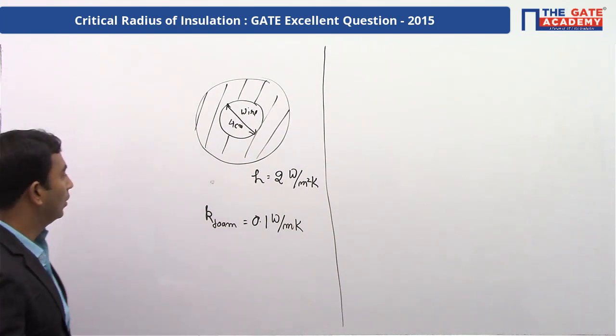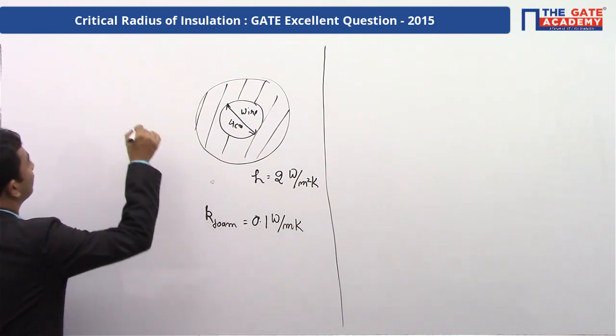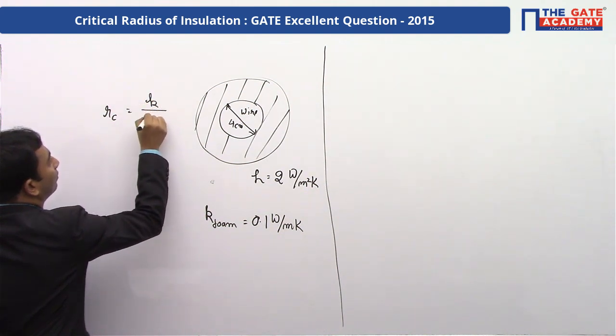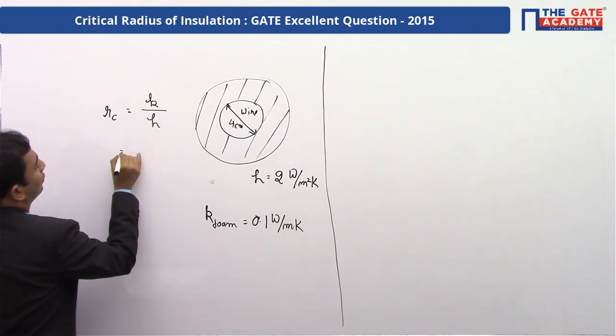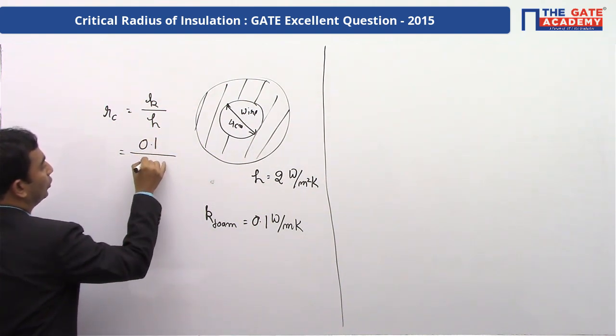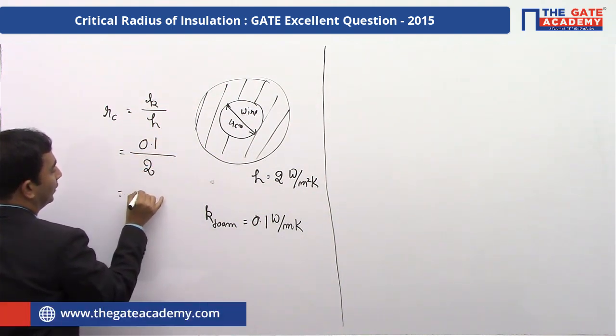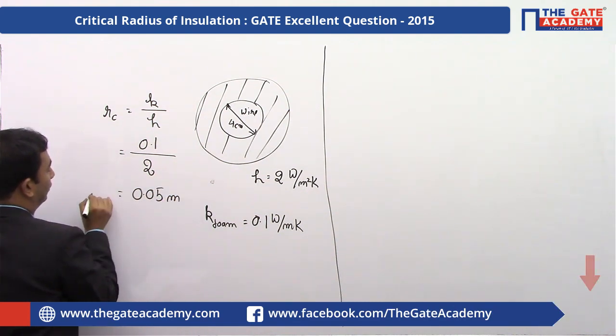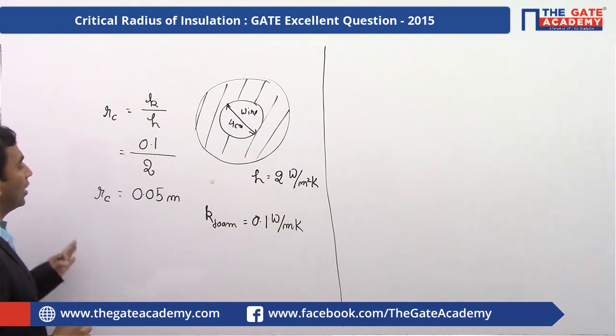Now, for critical radius of insulation, we know rc equal to k by h. So, k will be equal to 0.1 and h is equal to 2, so rc is 0.05 meter. So, we have got rc in meter.